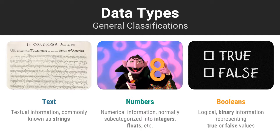The last general classification, Boolean, is a special one. Boolean information describes all the binary information that surrounds us each day. In reality, a lot of information can be classified in terms of whether it is true or false. For example, you are either tall enough to ride an amusement park ride, or you are not. You are either passing all your classes, or you are not. Any information that can be seen as truly binary, represented as true or false, is considered to be of the Boolean type.